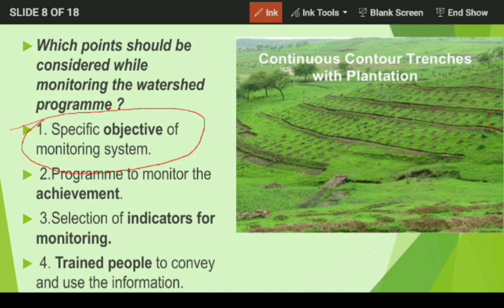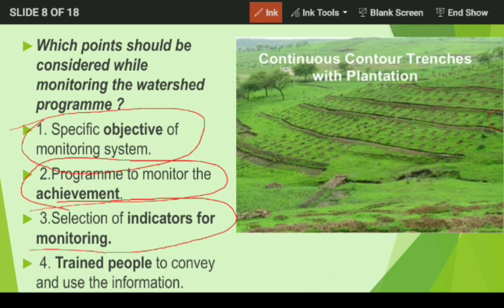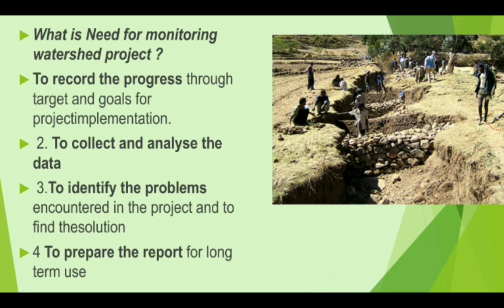There are four points to be considered while monitoring a watershed program. Number one is the specific objective of the monitoring system — what is the objective of our watershed program. Number two is the program to monitor the achievement — what we want to achieve. Number three is the selection of indicators for monitoring, like increase in pasture or increase in water level. Number four is to train people to convey useful information.